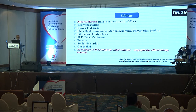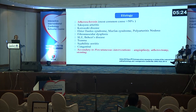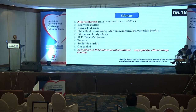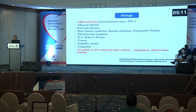The etiology: atherosclerosis accounts for more than 50% of cases of coronary artery aneurysm. Besides this, Takayasu's disease, Kawasaki's disease, Ehlers-Danlos syndrome, Marfan syndrome, polyarteritis nodosa, and fibromuscular dysplasia are other causes. There are also secondary causes of coronary artery aneurysm, including percutaneous intervention, angioplasty, atherectomy, and stenting.